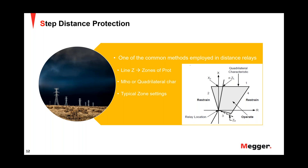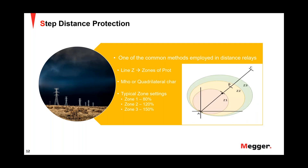Regarding typical zone settings: Zone 1 protects 80% of line A-B — it can be 75% or 90%, these are example settings. Zone 2 is 120% of the line, reaching beyond line A-B into B-C. Zone 3 can be 150%, and is often set in the reverse direction of the transmission line.